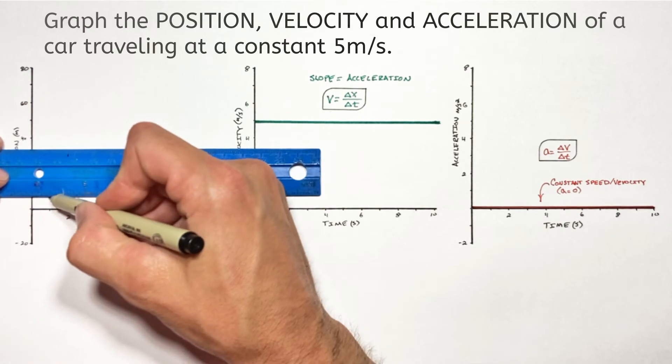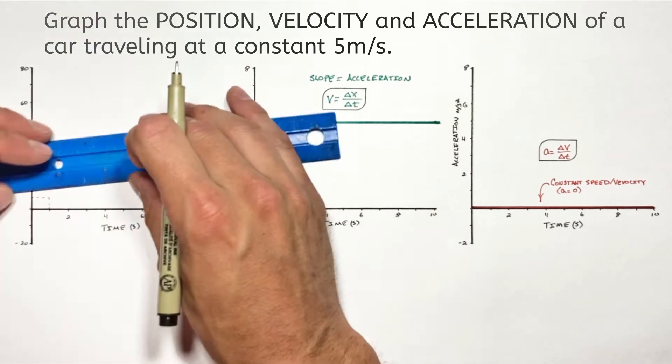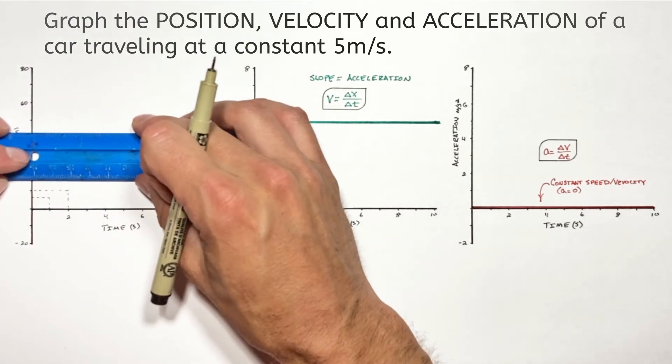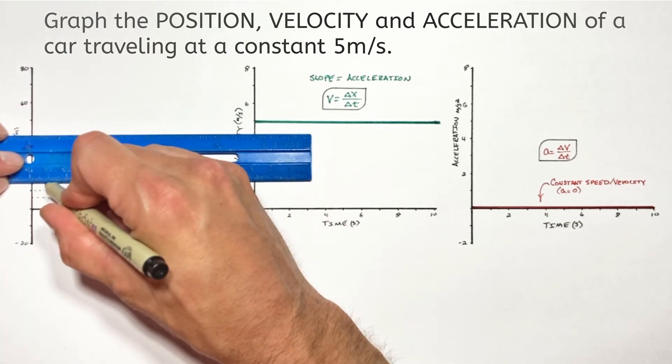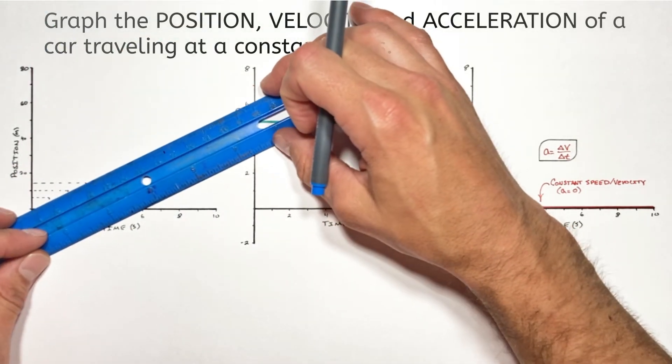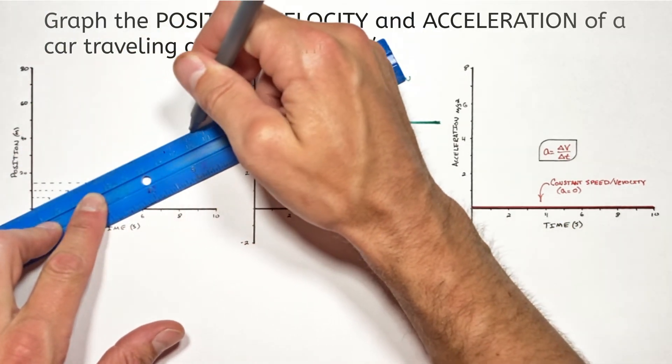So after one second, the car will have traveled five meters. After two seconds, it will have traveled 10 and so on and so forth. So what we see on our position versus time graph is a nice neat diagonal line. The value of that line increasing by five meters every second.